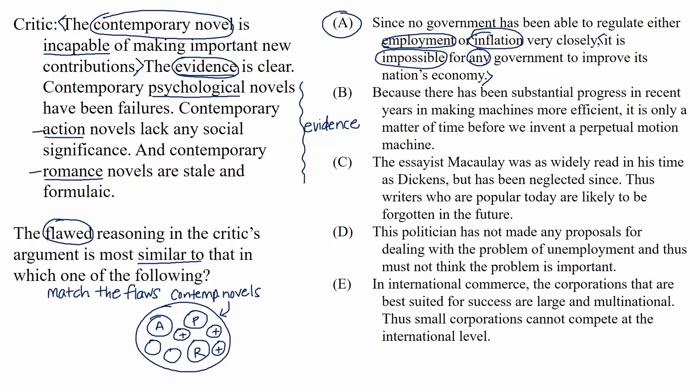Choice B: Because there has been substantial progress in recent years in making machines more efficient, it's only a matter of time before we invent a perpetual motion machine. This argument is flawed, but not in the same way as the stimulus. It makes a big jump from progress that has been accomplished to what will inevitably be accomplished — a shift in scope from past to future. That's a flaw, but it's not what we were looking for.